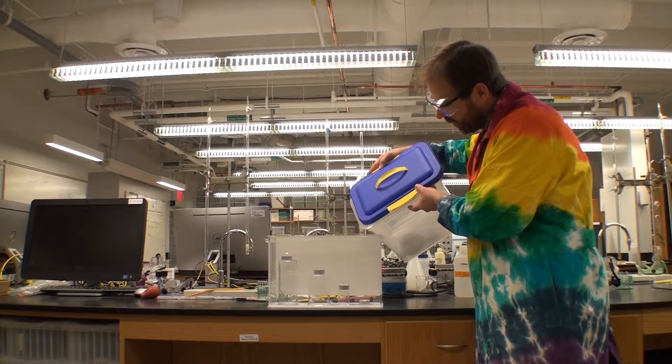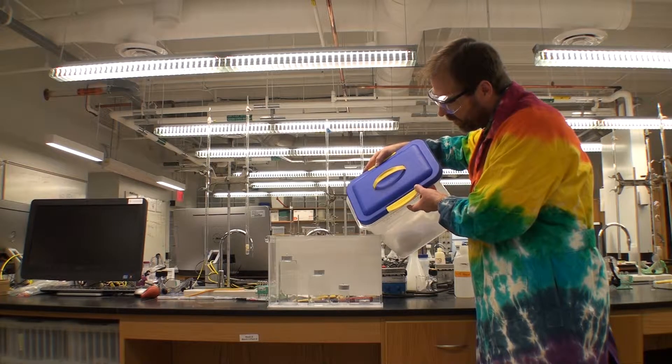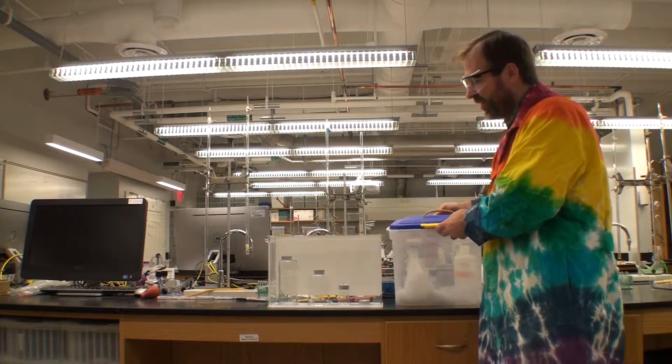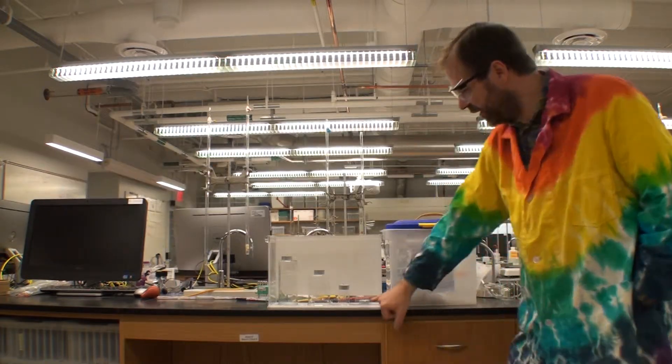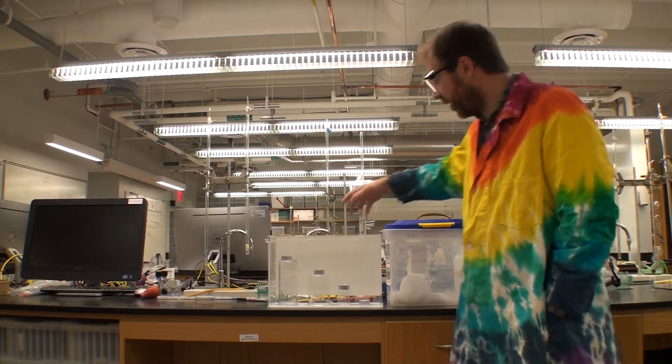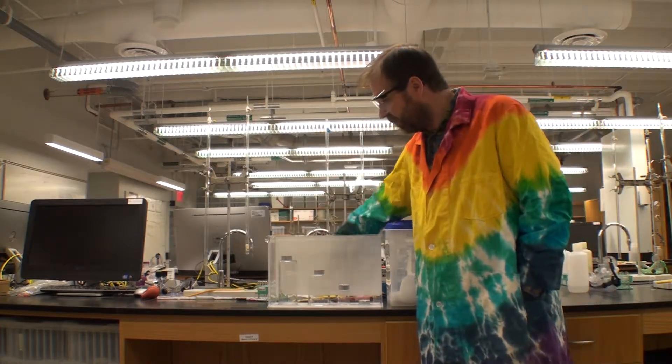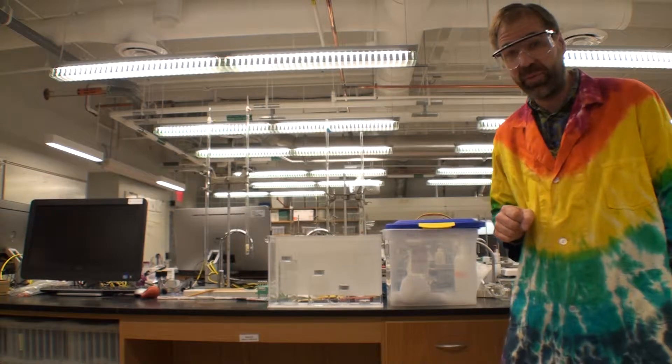Now remember that for something to burn, you need three things: you need a fuel, you need a spark, and you need oxygen. Now the fuel is the wax of the candle, the spark was the lighter that I used to start this, but then it needed oxygen to be able to burn.